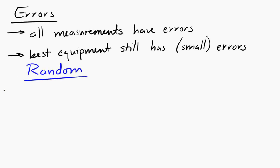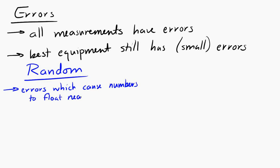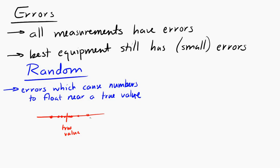Random errors are the errors which cause measurements to float around the true value. So let's say 25 students measure the length of a string using the same meter stick. All the students get slightly different results, and the results are centered around the true length — those are random errors. Random errors can be small; if the students are all very careful, they'll float just a little bit around the true value.